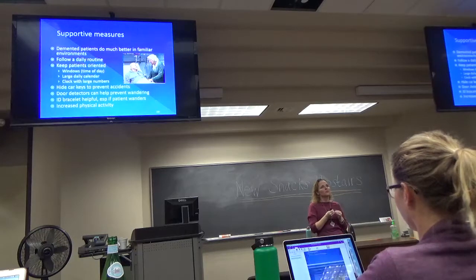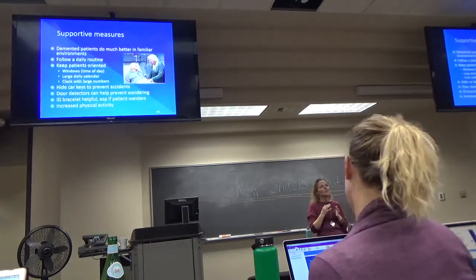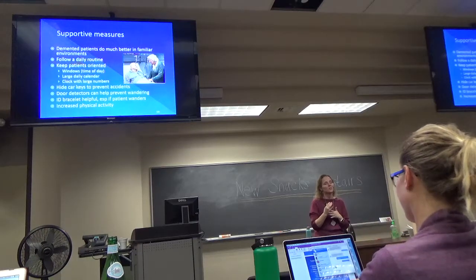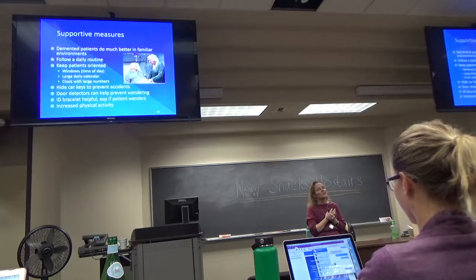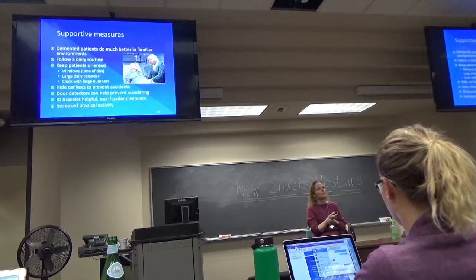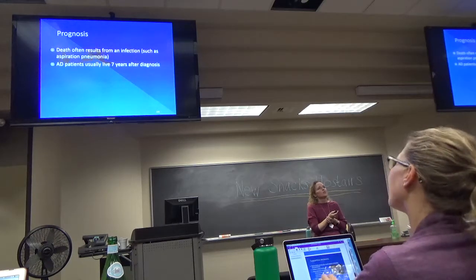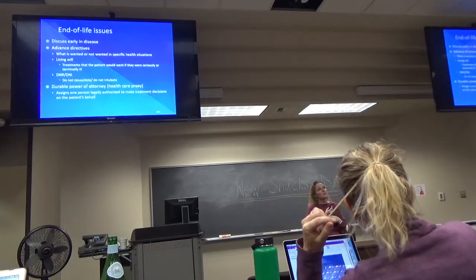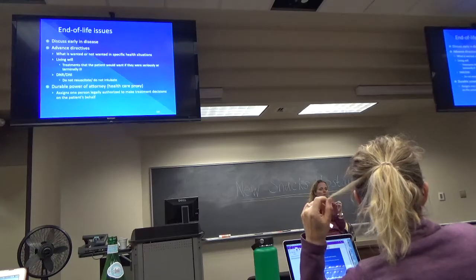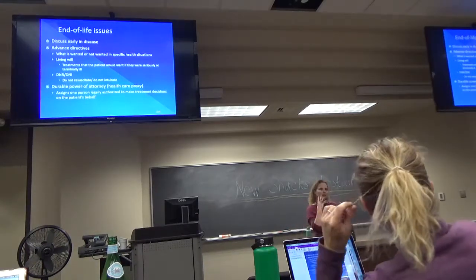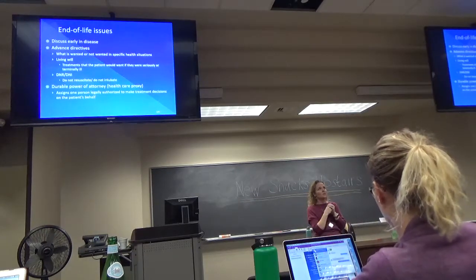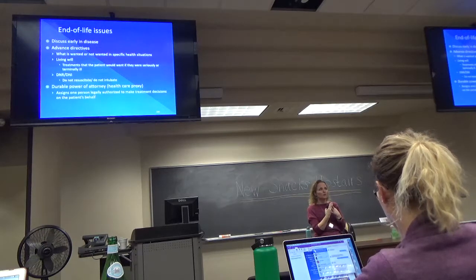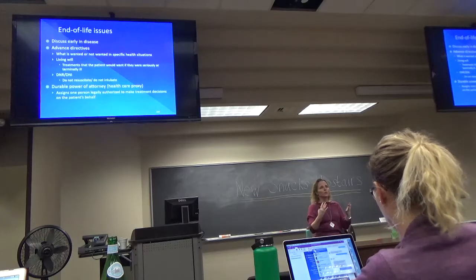Supportive measures: patients do much better in familiar environments, following a daily routine, keeping them oriented with light. Hide the car keys — they're going to forget they can't drive. Door detectors help prevent wandering. You can get an ID bracelet if they do wander. Increase physical activity so they're tired. Death often results from infection — if they're aspirating, watch for aspiration pneumonia. Discuss advanced directives, living will, DNR/DNI, and durable power of attorney as early as possible while they're still cognitively okay.